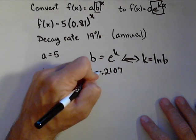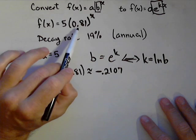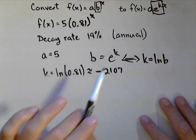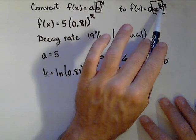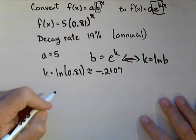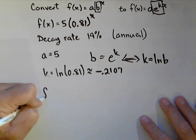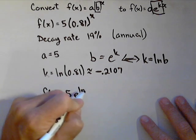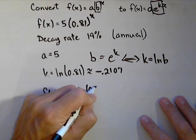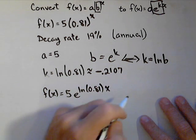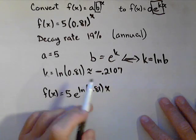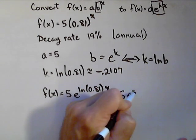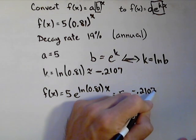Remember, we said it was decaying. In the AB to the X form, for decay we want to see the base is less than 1. In the Ae to the KX form, we need to see that K, our rate, is negative. So our model in this other form can be written as F of X equals 5 E to the natural log of 0.81 times X, or using our approximation, 5 E to the negative 0.2107 X.